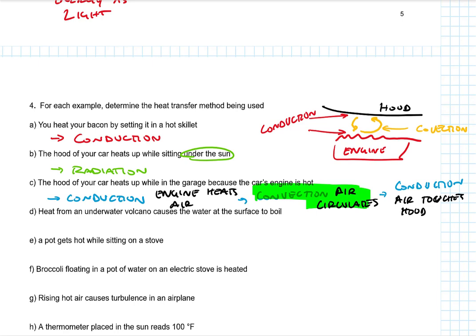Heat from an underwater volcano causes the water at the surface to boil. So we would say that this is convection. Even though in reality, we have the underwater volcano, and we have the water, and so we have the convection current, but here this water is heated by conduction, and then the water at the top only gets heated by convection, because it's moving up and down. Any time convection happens, that happens because fluids are moving.